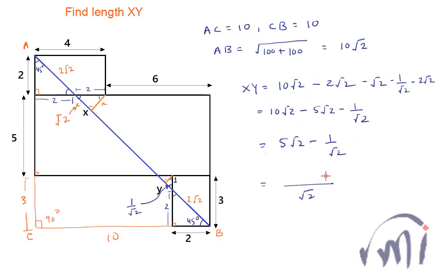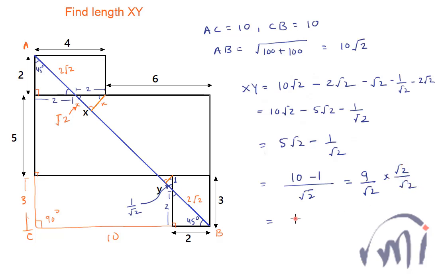Simplifying with √2 as the LCM: (√2 × √2 × 5 − 1) / √2, which equals (10 − 1) / √2 = 9/√2. So this is the length of the line segment XY. We can also write this as 9√2/2 by multiplying numerator and denominator by √2.